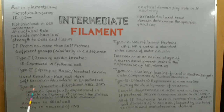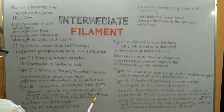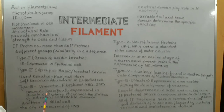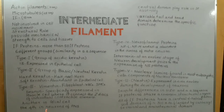Type 3 intermediate filament proteins include vimentin, desmin, and others. Vimentin is a Type 3 intermediate filament protein expressed in fibroblasts, white blood cells, and smooth muscle cells. Desmin is a Type 3 intermediate filament protein specifically expressed in muscle cells, where it connects the Z-disc of individual contractile elements. Another Type 3 intermediate filament protein is expressed in glial cells, and a fourth one is expressed in neurons of the peripheral nervous system.